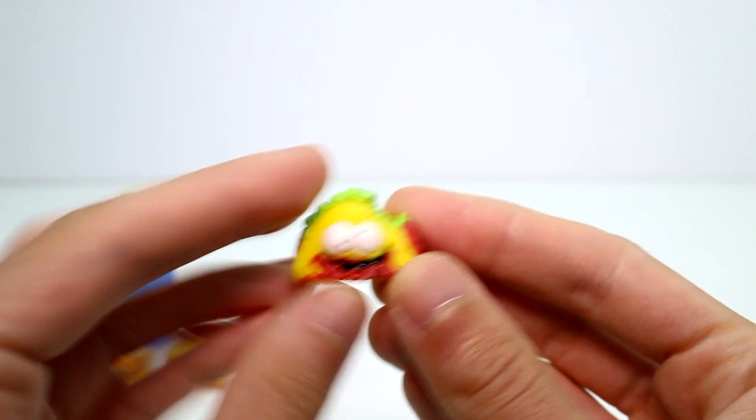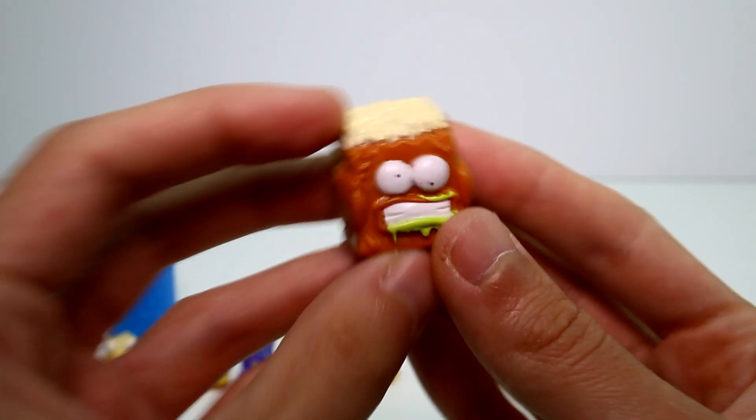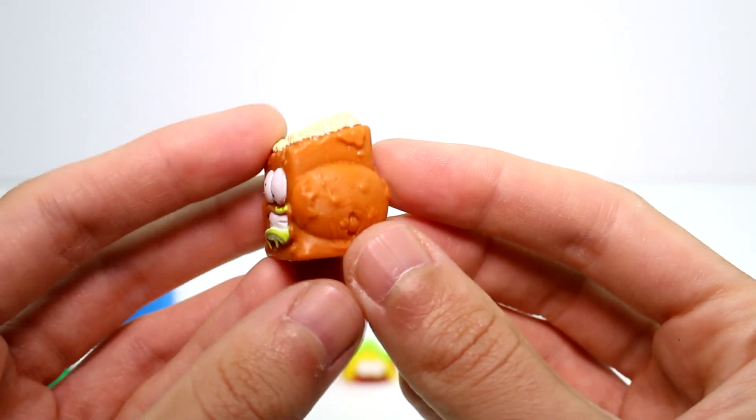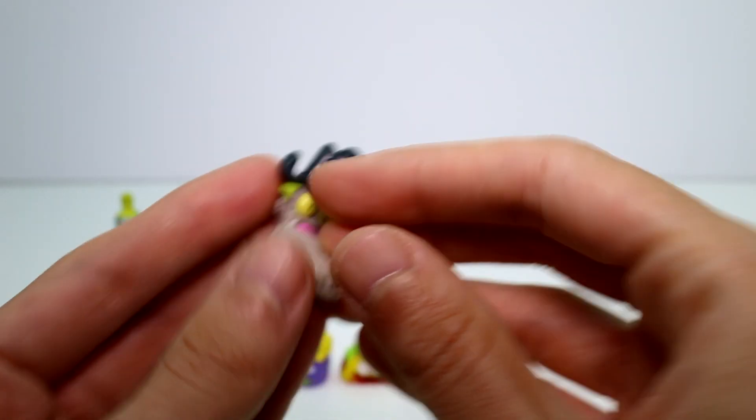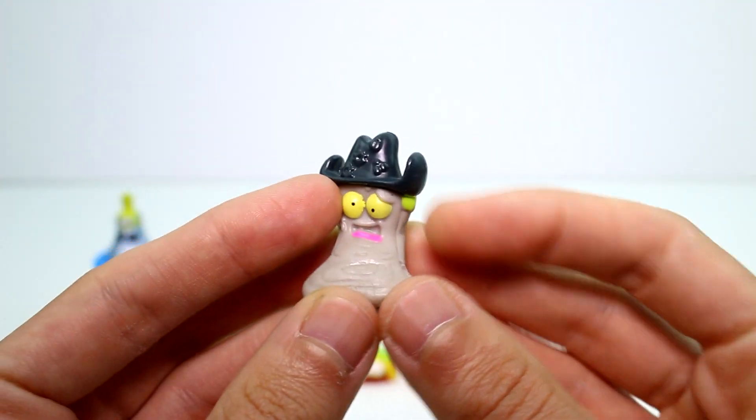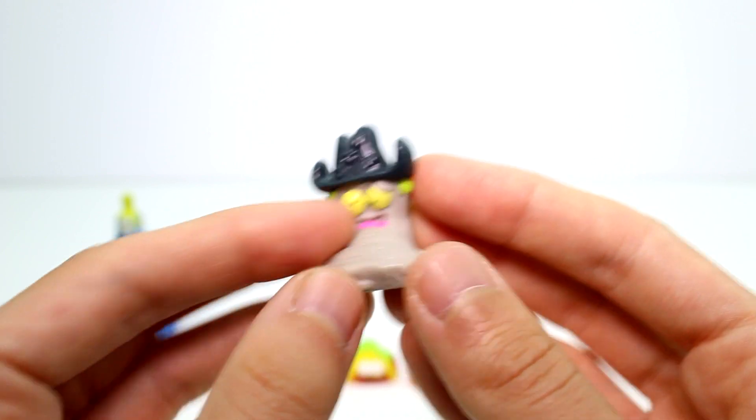Okay, and then we have Yuck Taco. Kind of looks pretty good, I'm not going to lie. And then we have Nasty Nuts. And then the last visible one we have is Miss Steak. He's like, ah, ah! Super fun.